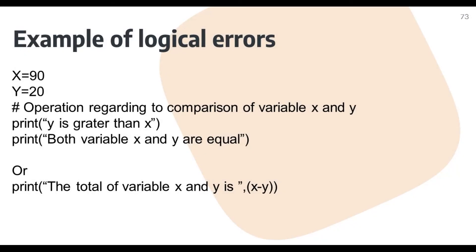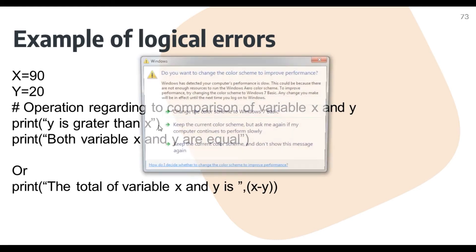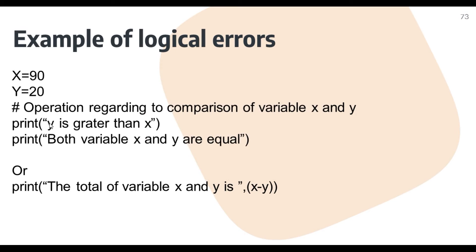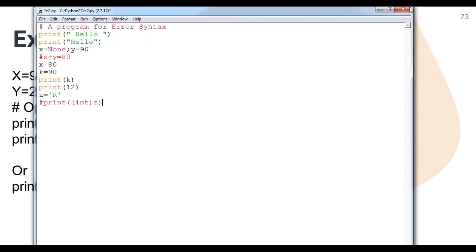Here is an example of a logical error. For example, x equals 90 and y equals 20. There is a comparison operation, and the programmer has written the wrong message: 'y is greater than x' — but that is not possible. The compiler will just compile and print it without knowing the meaning of what is inside the double quotes. That's why it is very difficult to catch by the interpreter and the programmer needs to debug it. Similarly, if the message says 'the total value of x and y is x minus y', that logic is wrong.